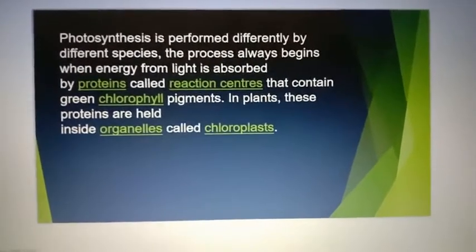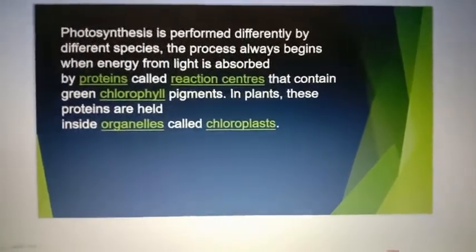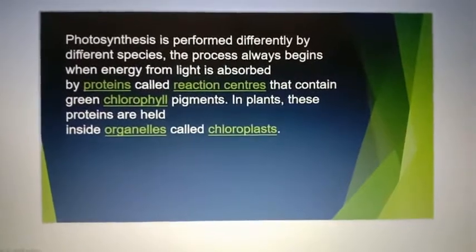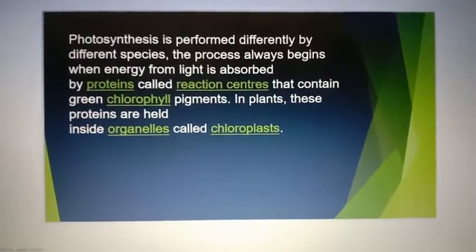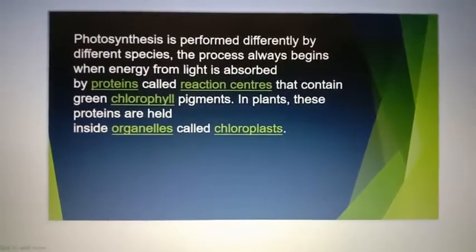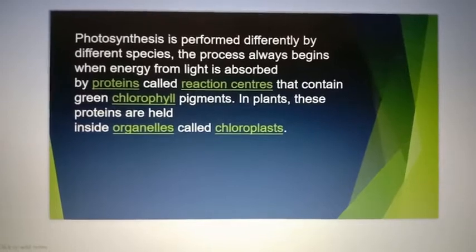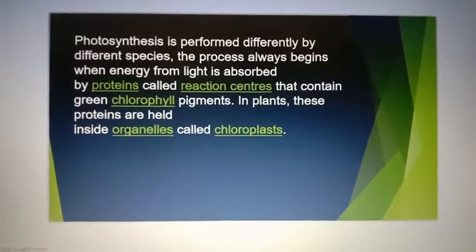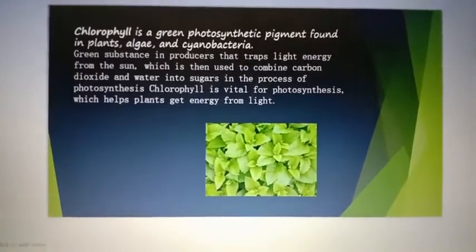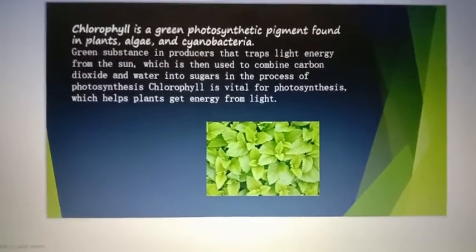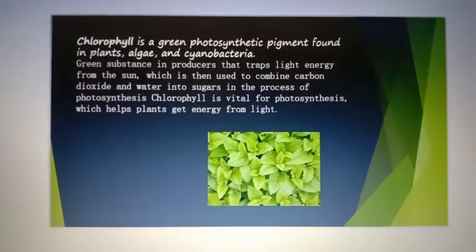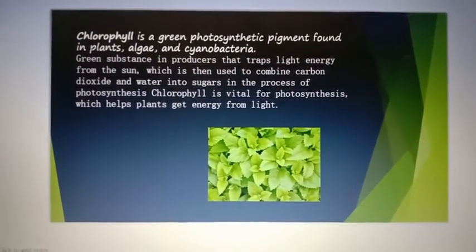The process always begins when energy from light is absorbed by proteins called reaction centers that contain green chlorophyll pigment. In plants, these proteins are held inside organelles called chloroplasts. Chlorophyll is a green photosynthetic pigment found in plants, algae and cyanobacteria.